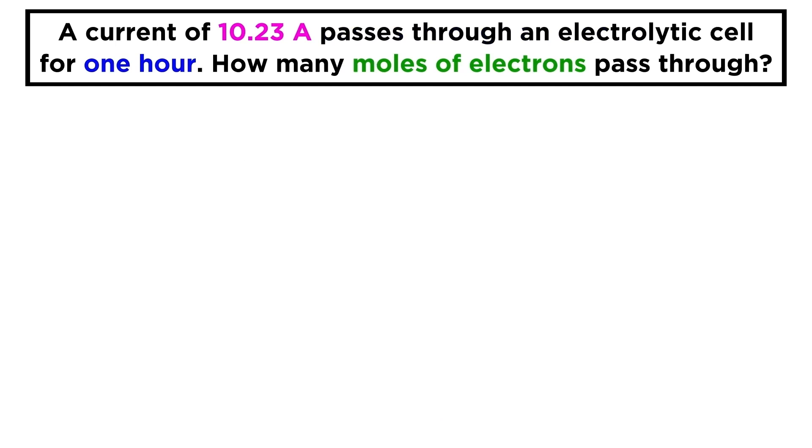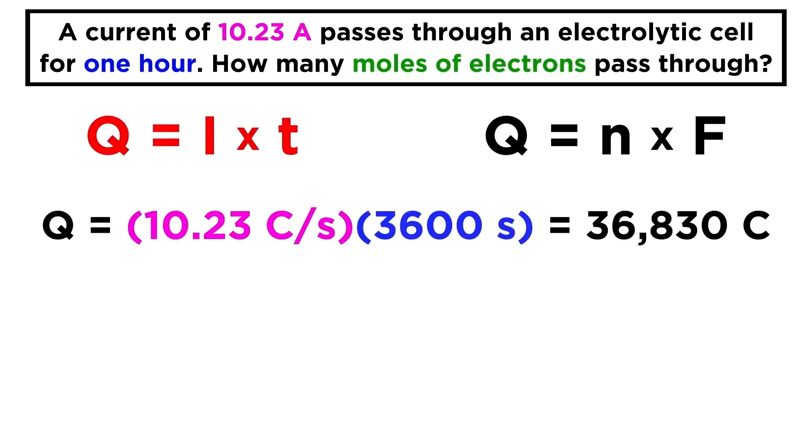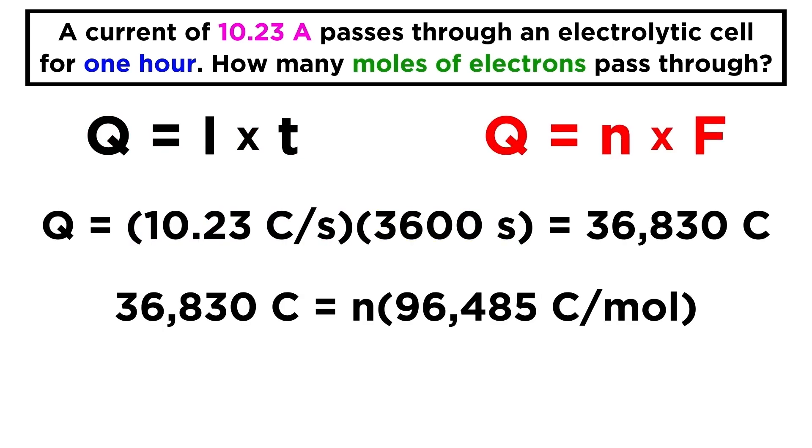Let's see this in action. Say that an electric current of 10.23 amperes passes through an electrolytic cell for 1 hour. How many moles of electrons pass through the cell in this time? Well, let's return to our two equations for Q. Let's use the first one to solve for Q. Now we can plug this value of Q into this equation and solve for n. Doing the arithmetic, we get 0.3817 moles of electrons that must have passed through the cell in 1 hour to generate the current.